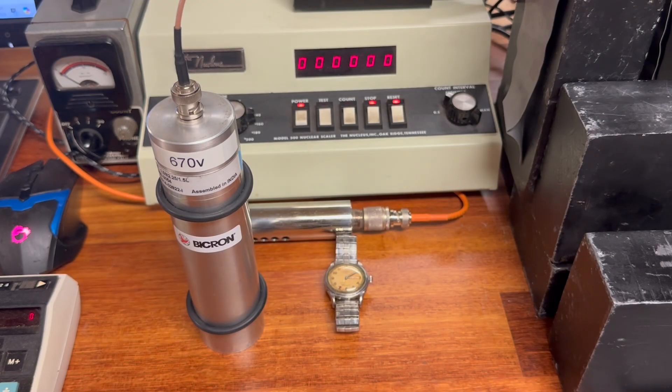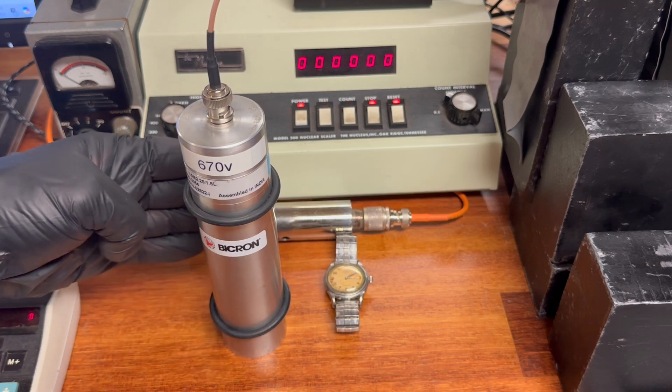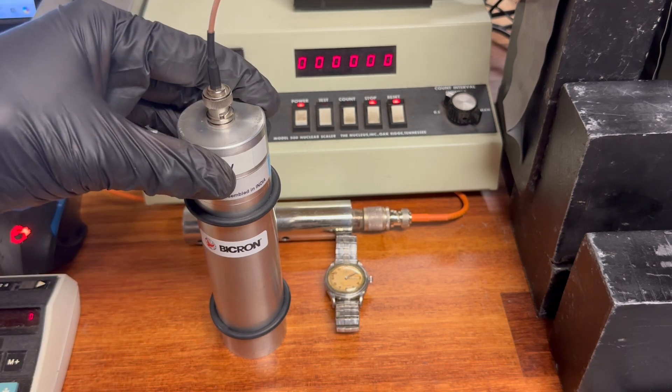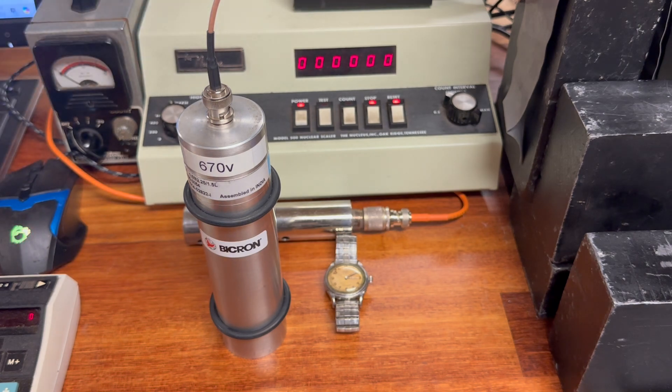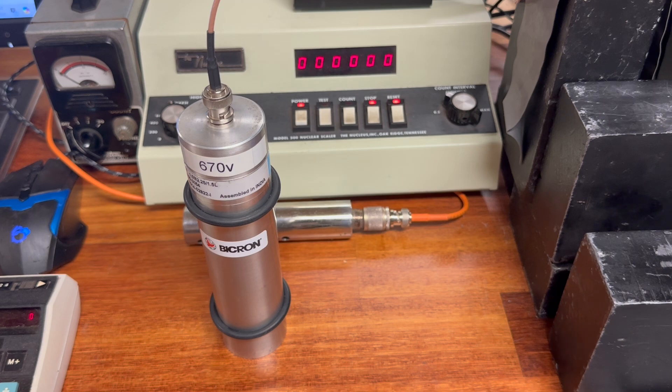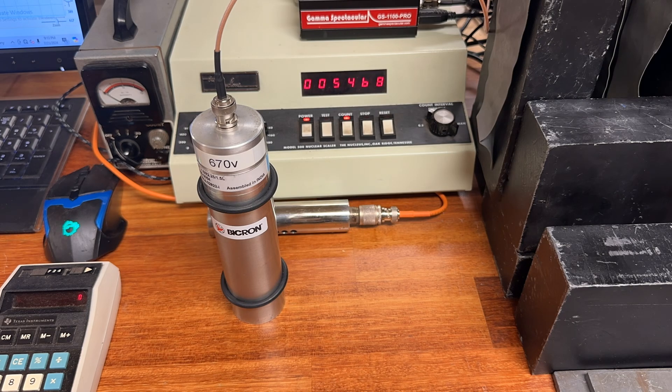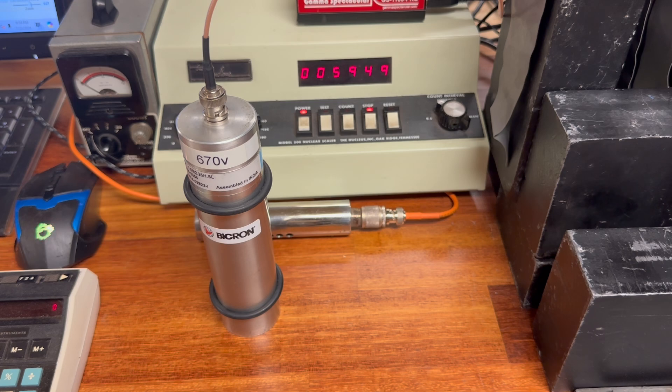So as a reminder, gamma scintillation detectors detect primarily only gamma radiation. Let's go ahead and do another test that we've done in other videos, utilizing the model 500 nuclear scaler made by the nucleus. This is going to give us a count rate timed at one minute, showing exactly how many counts we get per minute of gamma radiation coming from this watch. But before we do that, let's go ahead and set this watch across the room here. And let's go ahead and do a time count. It'll show us normal background radiation. We know that this particular shop averages around between 5,800 to 6,200 counts per minute background radiation. That's pretty close. 5,949 counts per minute.